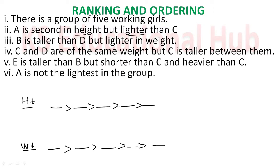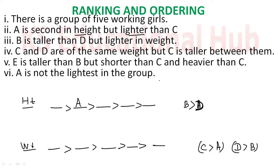A is second in height — so A's position is second. But lighter than C — meaning in weight, C is heavier than A. B is taller than D — B's position in height is above D, confirmed. But lighter in weight — meaning D's weight is more than B. Then C and D are of the same weight — so C and D's weight is always equal. But C is taller between them — meaning in height, C is greater than D.